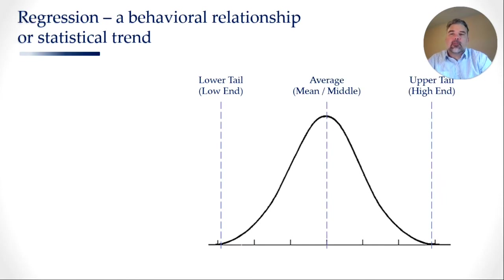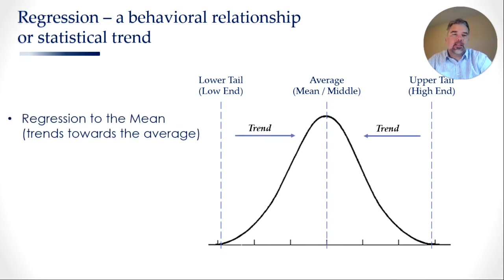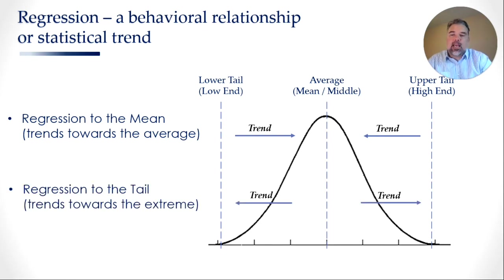So the next question is: what's a regression? Many of you will remember that it's a behavioral relationship or a statistical trend. In the case of regression to the mean, what we're actually saying is that the more case samples we throw into our sample population, the more the results will trend towards the average. Equally, regression to the tail says that the more samples we throw into the total population, the more the results will trend towards the outer limits or the extreme. That is the fundamental difference between regression to the mean and regression to the tail.